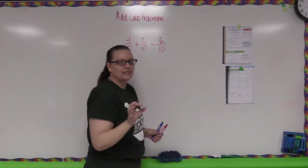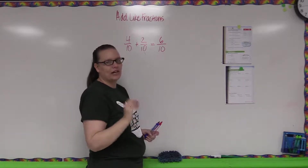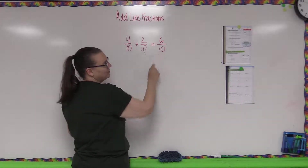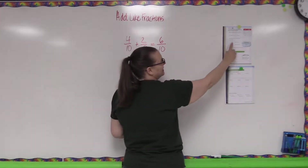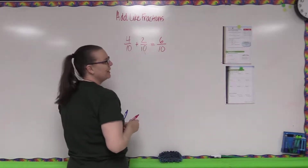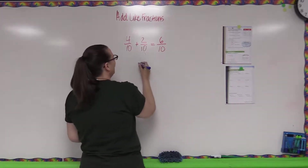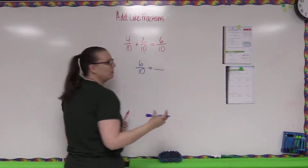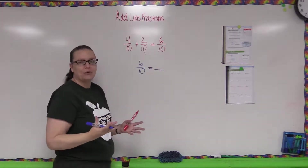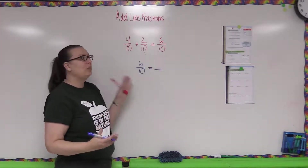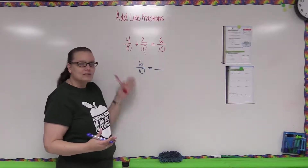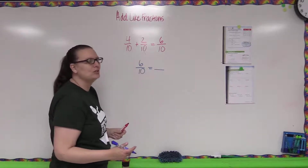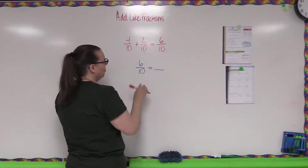One thing this page asks us to practice is simplifying fractions — writing them in simplest form. We're not finished at six-tenths; we need to simplify it. In math, to make a fraction smaller you use division. We ask: what number can we divide both the numerator and denominator by? We want a common factor. Since both six and ten are even, we can divide by two.